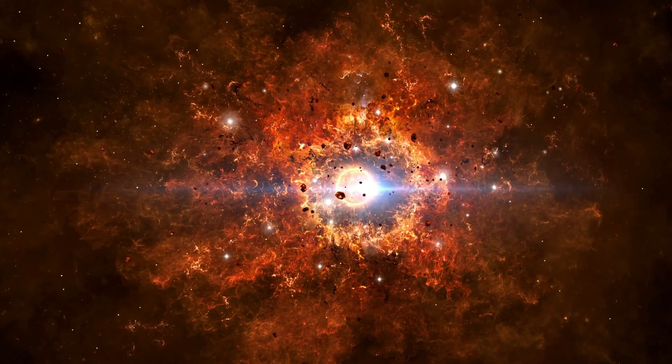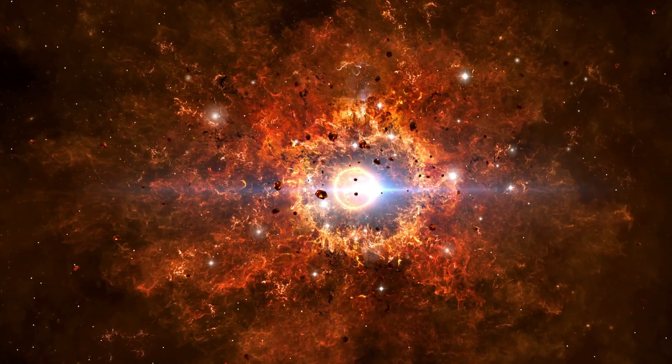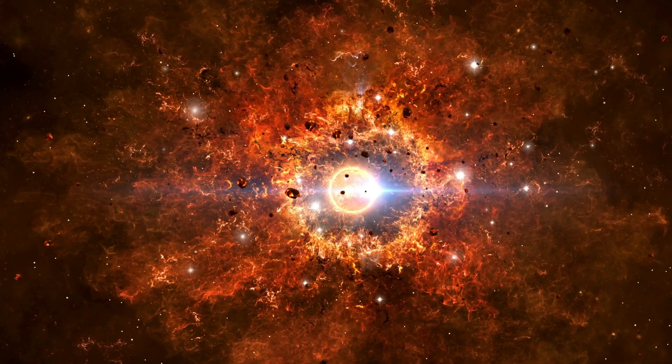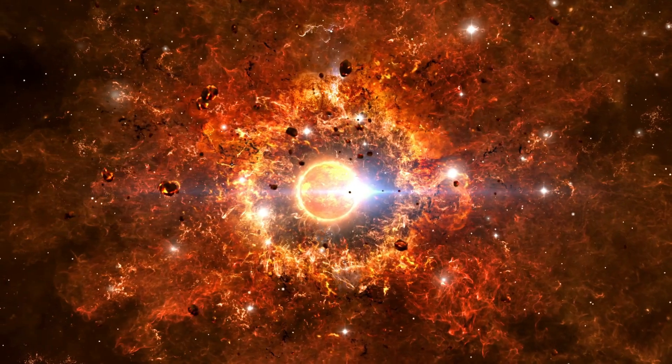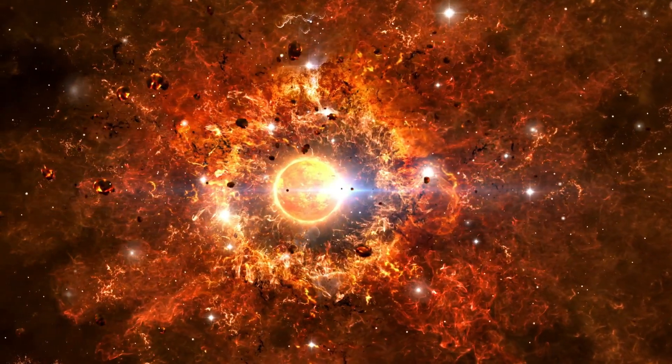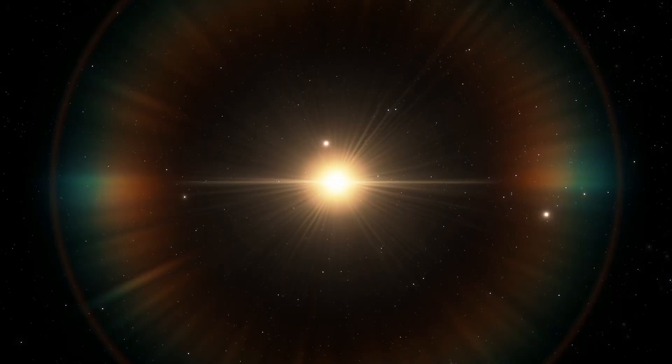From Earth, we'll first detect a flood of neutrinos, followed by a brilliant new point of light in Orion that could outshine everything except the sun and moon. The aftermath may leave behind an ultra-dense neutron star or even a black hole—a permanent reminder of the star's spectacular demise.